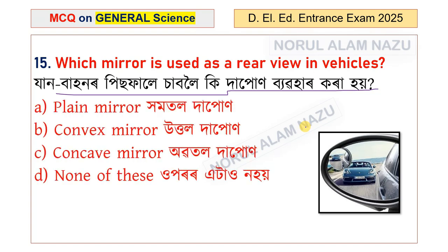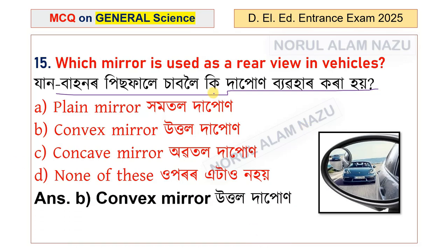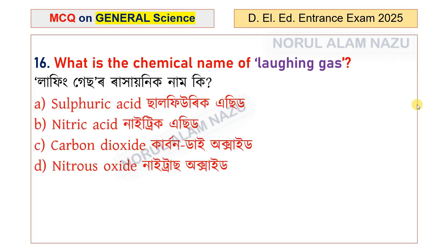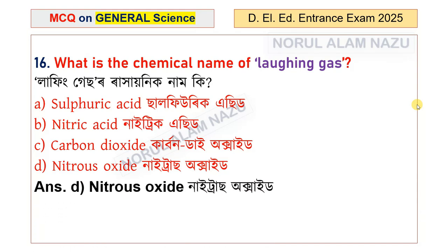The rear-view mirror used in vehicles is a convex mirror. Question number 16: What is the chemical name of laughing gas? The options are sulfuric acid, nitric acid, carbon dioxide, and nitrous oxide. The answer is nitrous oxide — that is the chemical name of laughing gas.